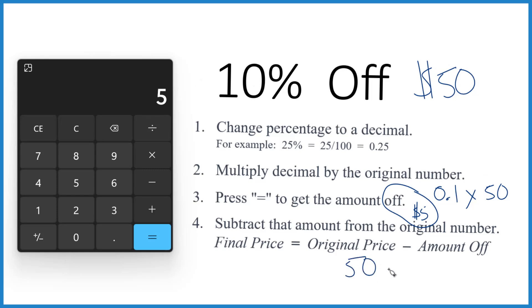we would take the original, minus how much off we got, 50 minus 5 is 45. So we'd pay $45 if we took 10% off the number 50, or the price $50.